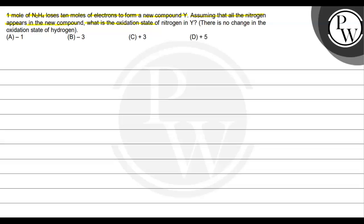what is the oxidation state of nitrogen in Y? There is no change in the oxidation state of hydrogen. Options are: minus 1, minus 3, plus 3, and plus 5.